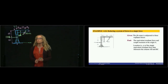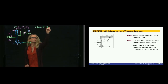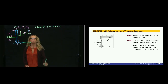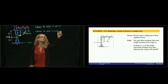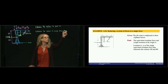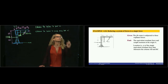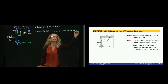Hi, this is problem 4.24. In this case, they want us to reduce the system to point A. And then the second part is to reduce the system to a single force that intersects AB, which is this vertical column, and DC.